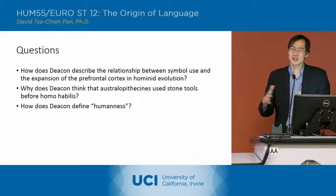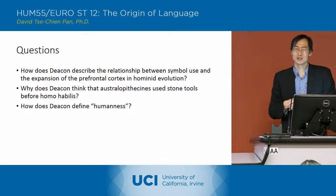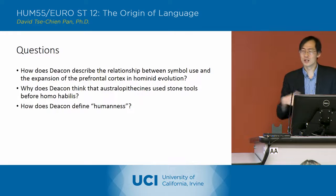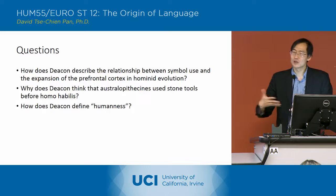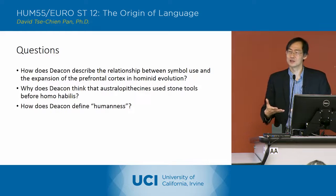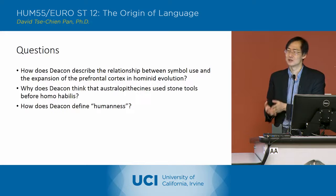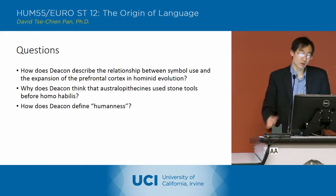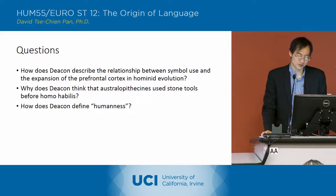Homo symbolicus would include all these different biological species, as long as they're participating in a single symbolic tradition — or several symbolic traditions, in fact.